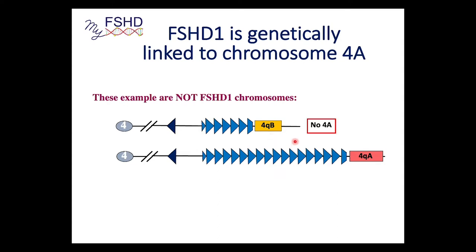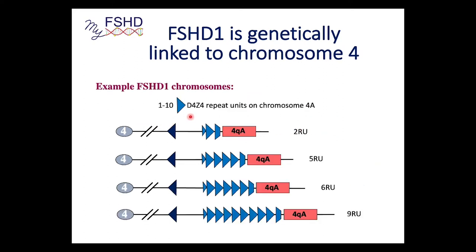If you're 4qB, it just can't be FSHD. So 4qA is permissive but not pathogenic on its own — you need it for FSHD, but it does not cause FSHD by itself. More than 10 repeats is also not FSHD, regardless of whether it's a permissive chromosome. You can be 2, 5, or 9 repeat units — it'll be consistent in your family. In general, the larger the deletion — meaning fewer repeats — the more severe the FSHD; and the smaller the deletion — more repeats — the more mild. Not always, but tends to be that way.